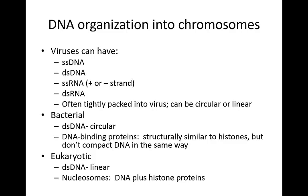Bacterial or prokaryotic DNA is going to be double-stranded DNA, and as we discussed previously, it is circular. There are some DNA binding proteins. Structurally they are similar to histones, which we find in eukaryotic DNA. However, they don't have some of the same roles — they do not compact DNA down in the same way. Bacterial and prokaryotic cells just have much less DNA than eukaryotic cells do.